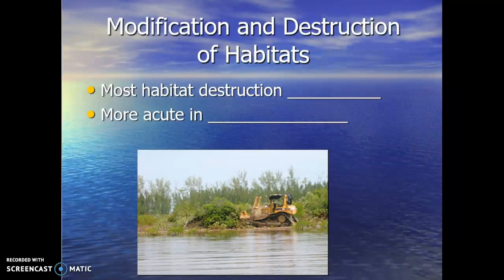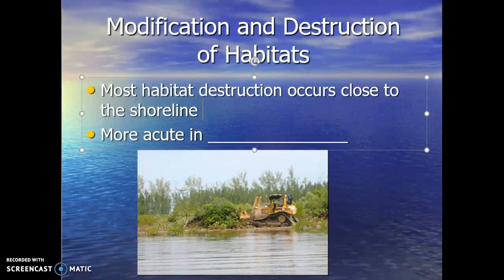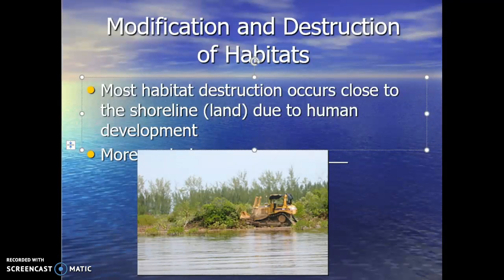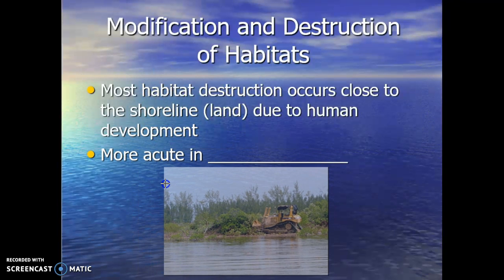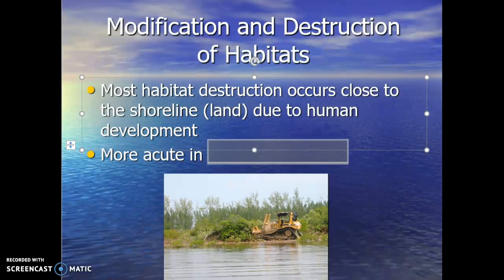One of the biggest things we're doing to the ocean is the modification and destruction of various marine habitats. Most habitat destruction occurs close to the shoreline, close to land. This is primarily due to human development. When we develop resorts, put up houses, we do things that require us to modify the marine ecosystem. Even along a shoreline, we're saying let's bulldoze those mangroves to make way for a subdivision or a shrimp farm. So we're definitely impacting marine habitats significantly.